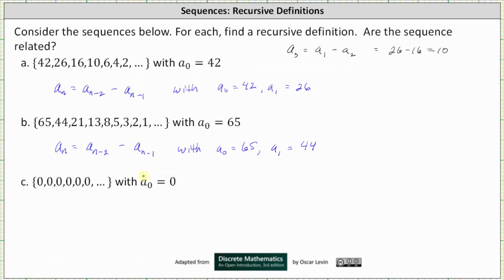And now for part C, we're going to have a strange sequence here. Notice how we have a sequence of zeros. But if we wanted to, we could give the same recurrence relation since 0 minus 0 is 0. So we'll go ahead and give the same recurrence relation, which is a sub n equals a sub n minus 2 minus a sub n minus 1. But now the initial conditions are a sub 0 equals 0 and a sub 1 equals 0.